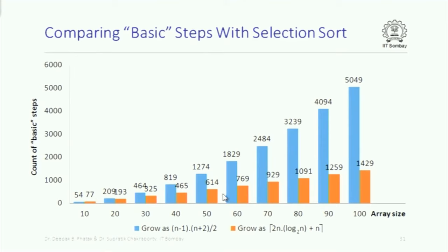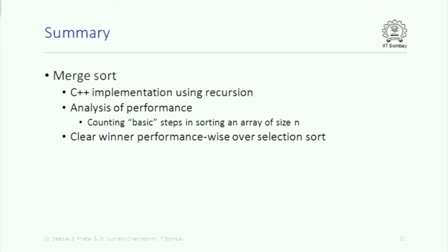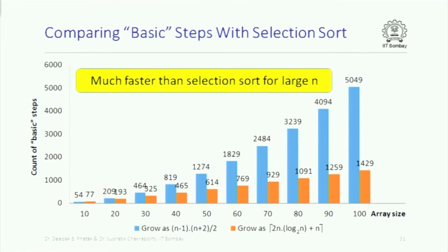Here is a plot — the blue part shows how the number of basic steps for selection sort grows as the array size increases from 10 to 100, and the orange part shows the same for merge sort. You can clearly see the gap is increasing, and it will increase further as N grows. This is the difference between (N-1)·(N+2)/2 for selection sort and 2N·log₂(N) + N for merge sort. Merge sort is therefore much faster than selection sort. Are there any doubts about this part of the lecture?